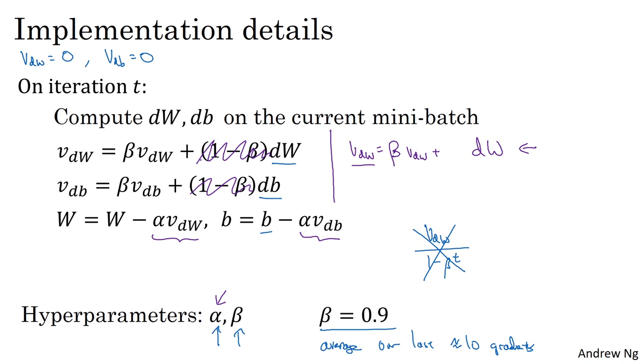But I find that this particular formulation is a little less intuitive because one impact of this is that if you end up tuning the hyperparameter beta, then this affects the scaling of vdW and vdb as well, and so you end up needing to retune the learning rate alpha as well, maybe. So I personally prefer the formulation that I have written here on the left rather than leaving out the 1 minus beta term. So I tend to use the formula on the left, the printed formula with the 1 minus beta term. But for both versions, having beta equals 0.9 is a common choice of hyperparameter. It's just that alpha, the learning rate, would need to be tuned differently for these two different versions.